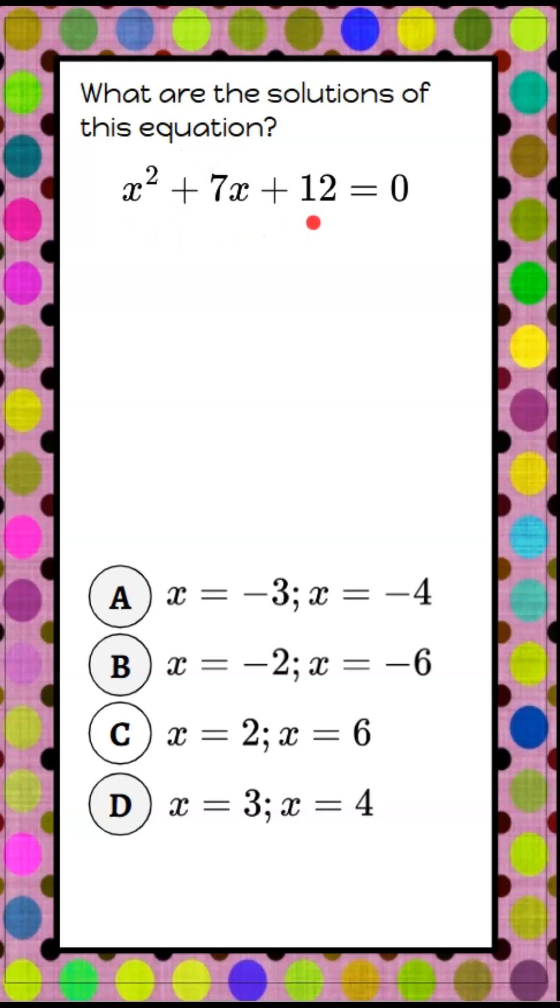x squared, add 7x, add 12, equals 0. And we're given four answer choices.